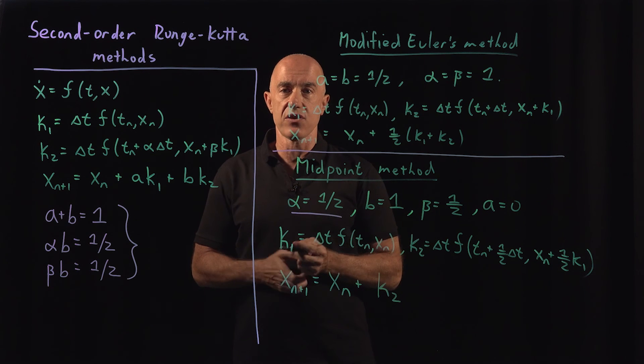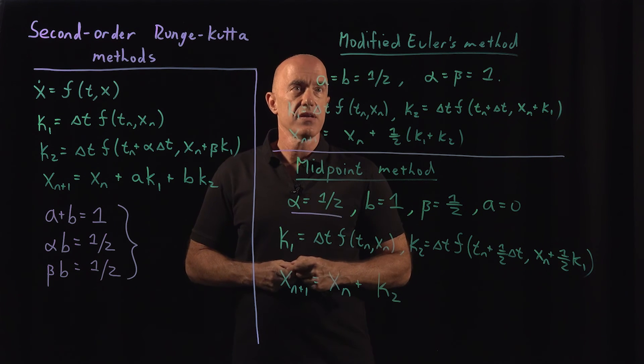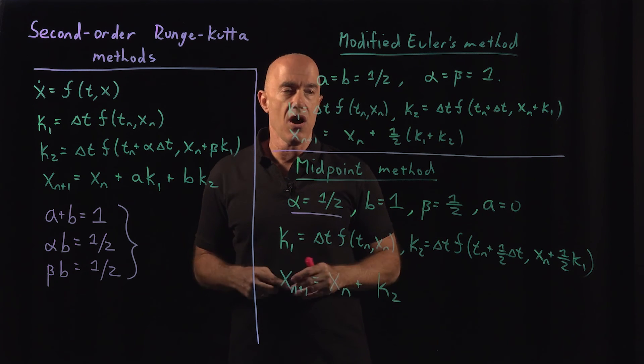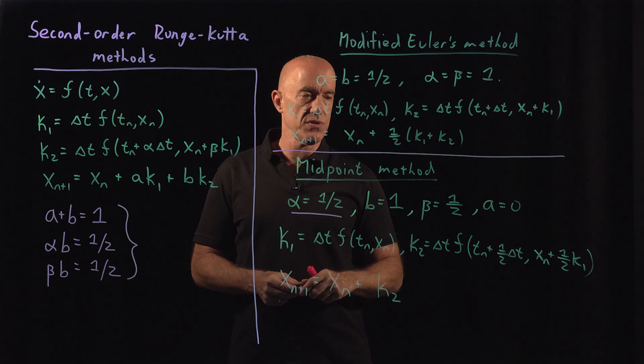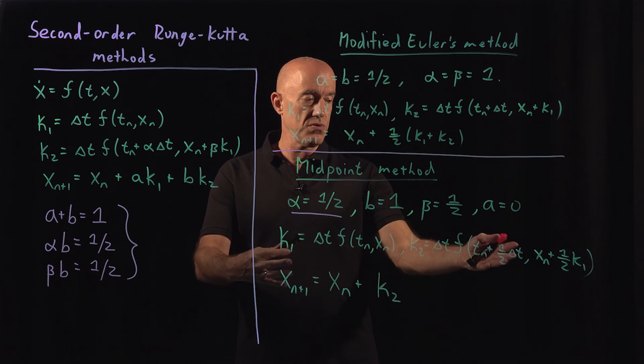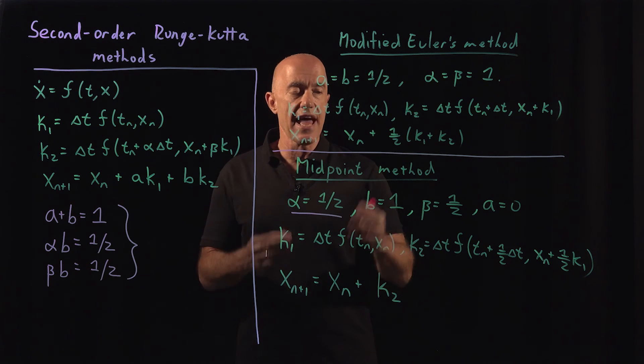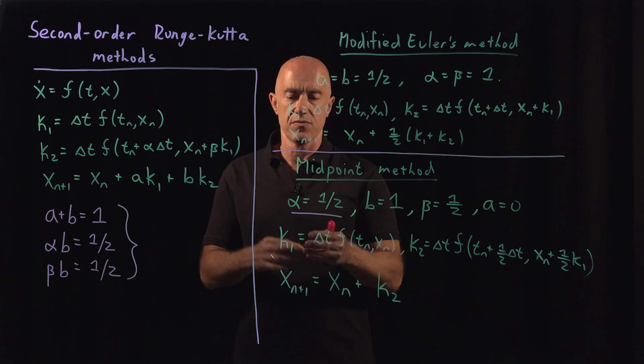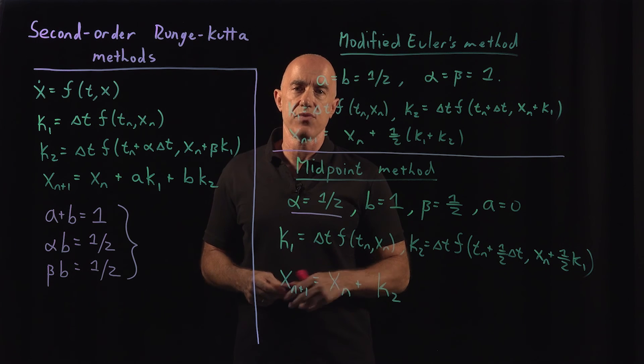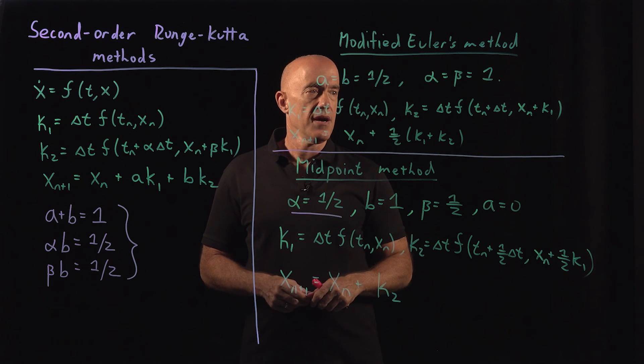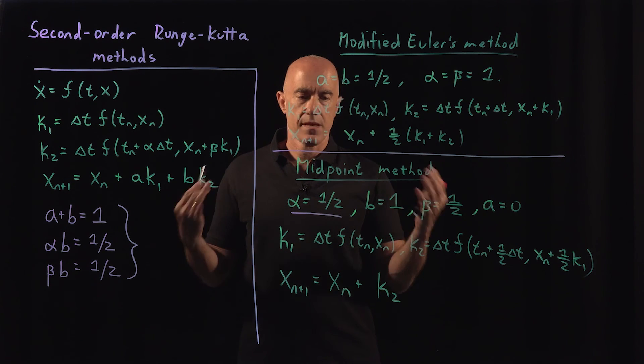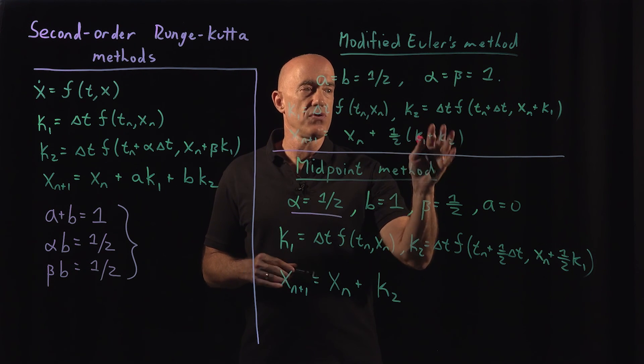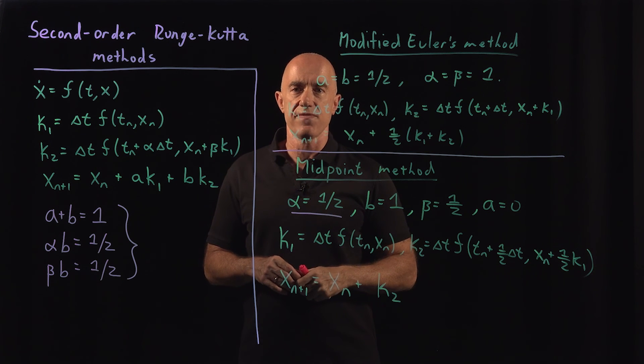So also a second order Runge-Kutta method. So in fact, the accuracy of these two methods are more or less the same. They're accurate to second order. Two different methods. You can have other methods besides these ones, right? One of them I give you as a reading problem.